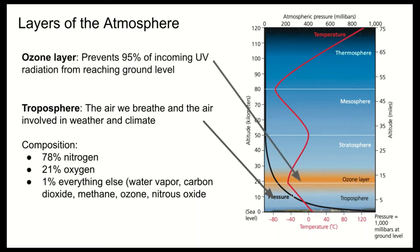The ozone layer sits between the stratosphere and troposphere. It is a thick accumulation of ozone particles (O3) and is particularly important because it prevents about 95% of incoming UV radiation from reaching ground level. That UV radiation is what causes sunburns. If 95% more UV radiation reached the ground, the effects would be catastrophic. Other layers like the stratosphere, mesosphere, and thermosphere will not be discussed in the context of air pollution.